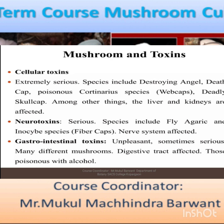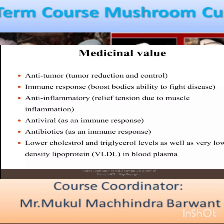Some toxin types include: cytotoxins, neurotoxins, and gastrointestinal toxins. Cytotoxin-producing species include the Destroying Angel and Death Cap, which affect the liver and kidneys. Neurotoxic species include the fly agaric, which affects the nervous system. Gastrointestinal toxins cause unpleasant and sometimes serious effects on the digestive tract, particularly when combined with alcohol.